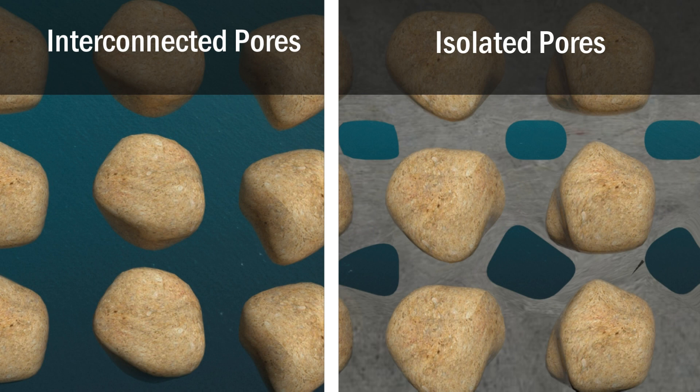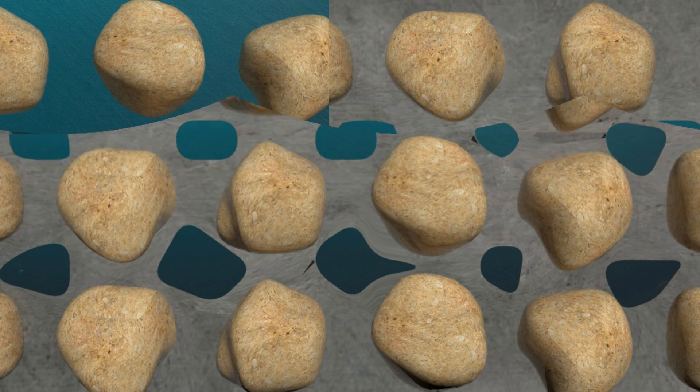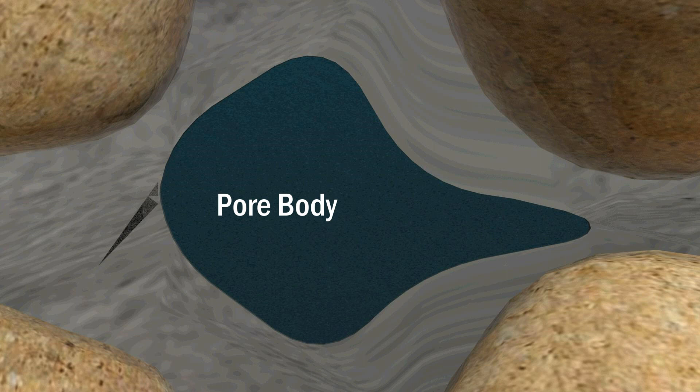Absolute porosity deals with the total pores inside the rock, while effective porosity only deals with the interconnected ones. Pores can be divided into two main parts: pore body and pore throat. Porosity is mainly dependent on pore body, while pore throat affects permeability, which will be discussed in another video.